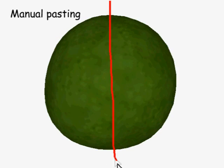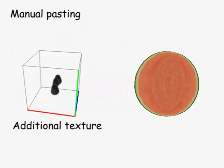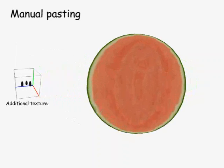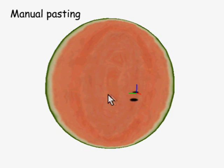After filling the model with the texture, the user can manually paste additional solid textures onto the model. The user can interactively manipulate the position, orientation, and scale of the texture.